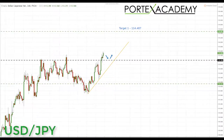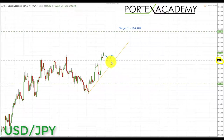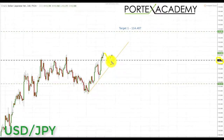The next pair is the US dollar Japanese yen. Last week price broke above the key area of resistance at 113.386. The setup is fairly straightforward next week — we are looking for a pullback and a retest of this area, possibly a little bit deeper and a test of the upward sloping trend line. We're going to be looking for bullish formations and patterns to appear in this area, and we're going to be looking to take those longs up towards the target of 114.487, which is the next key area of resistance in the US dollar Japanese yen.